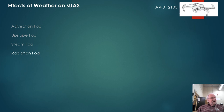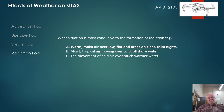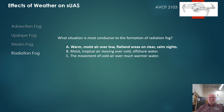Radiation fog forms under specific conditions: clear skies, no wind, and very small temperature-dew point spreads with high relative humidity. Radiation fog is restricted to land because water surfaces cool little from nighttime radiation. A sample question: what situation is most conducive to the formation of radiation fog? Option B — moist tropical air moving over cold offshore water — is wrong because radiation fog doesn't form over water. Option C — cold air over warmer water — is also wrong. The correct answer is A: warm moist air over low flatland areas on clear, calm nights.